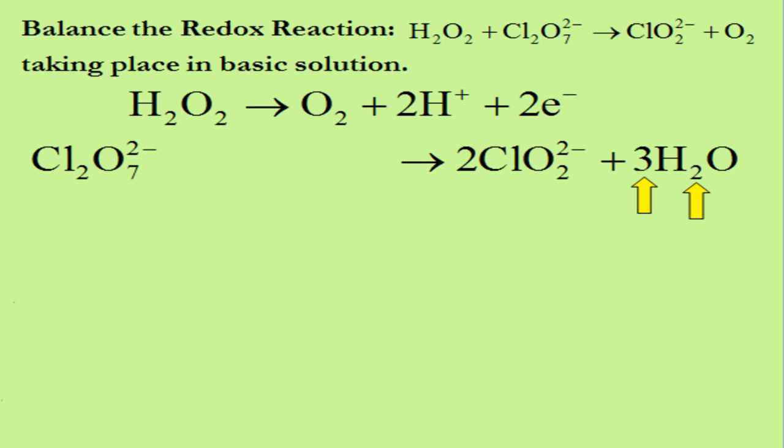The next step is to balance H atoms. There are three times two, or six H atoms on the right side, and there are none on the left side. To balance H's, we add six H⁺ to the left side. Now there are six H atoms on each side, so H's are balanced.